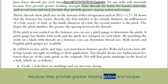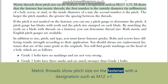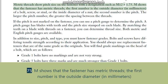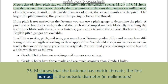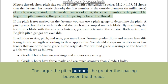Metric threads show pitch size on the fastener with a designation such as M12 × 1.75. The 'M' shows that the fastener has metric threads. The first number is the outside diameter in millimeters of a bolt, screw, or stud, or the inside diameter of a nut. The second number is the pitch; the larger the pitch number, the greater the spacing between the threads.